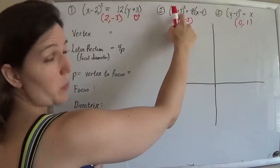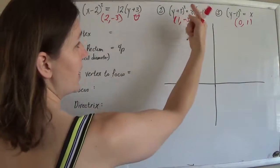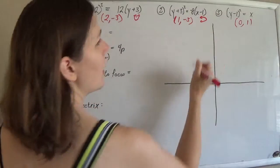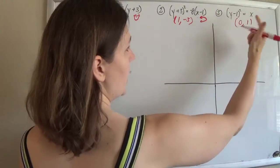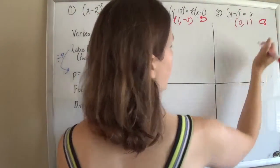y squared, that's weird, so left or right, negative, so to the left. y squared again, but nice and positive, so that's going to be to the right.